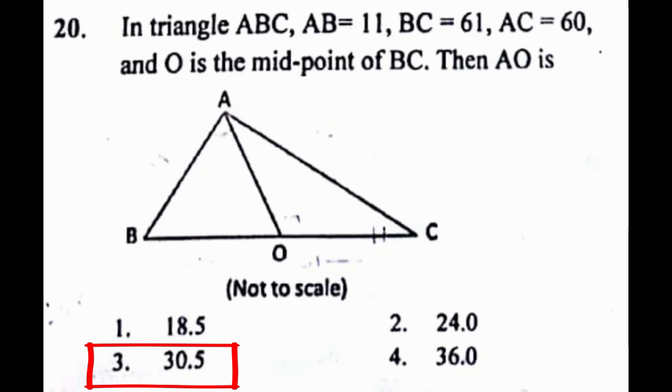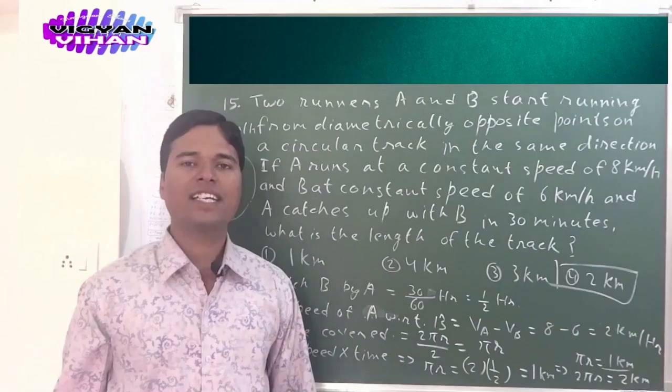Problem number 20, the last problem of this episode: In triangle ABC, AB equals 11, BC equals 61, AC equals 60 and O is the midpoint of BC. Then AO is? The correct answer to this problem is option 3, that is 30.5. Keep practicing.